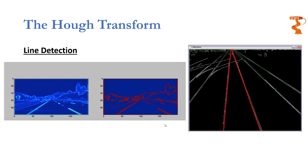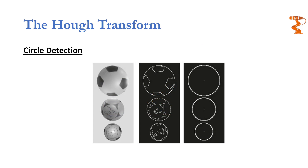In practical scenarios, Hough Transform can be used to detect lines. For example, in the image shown on the left, automatic lane detection can be easily accomplished using Hough Transform, which can figure out the lines drawn on the road. On the right side, Hough Transform can effectively detect rail tracks. Similarly, circles can be found using Hough Transform quite easily — the image shown in the center is an edge image, and applying Hough Transform onto it allows circles to be easily found.